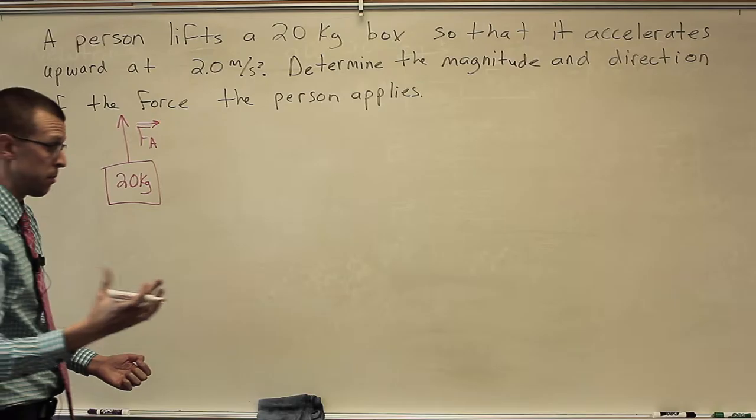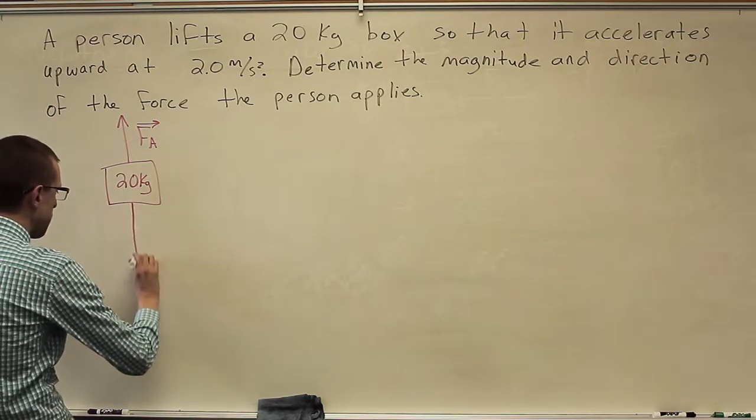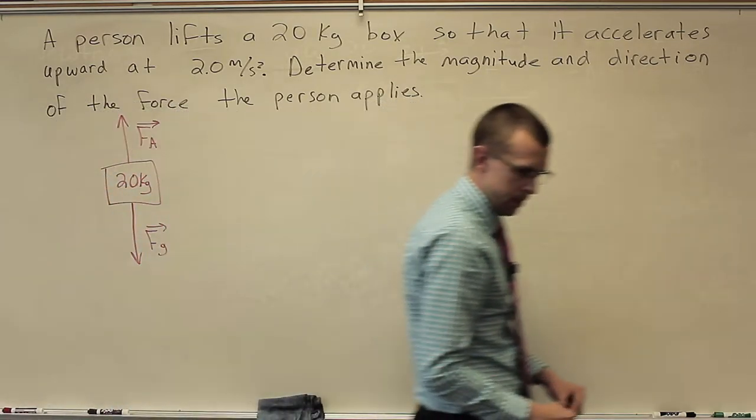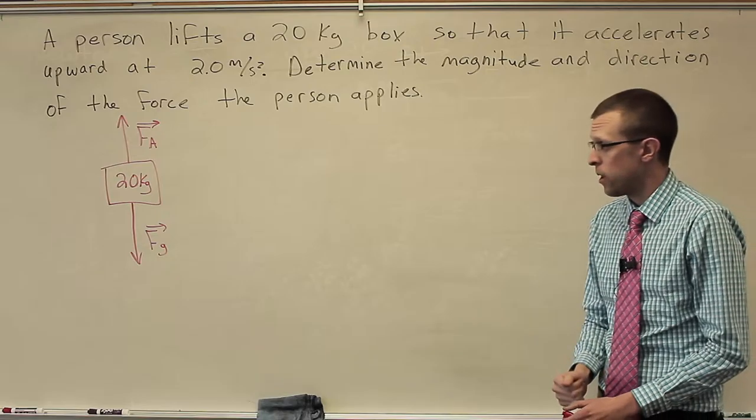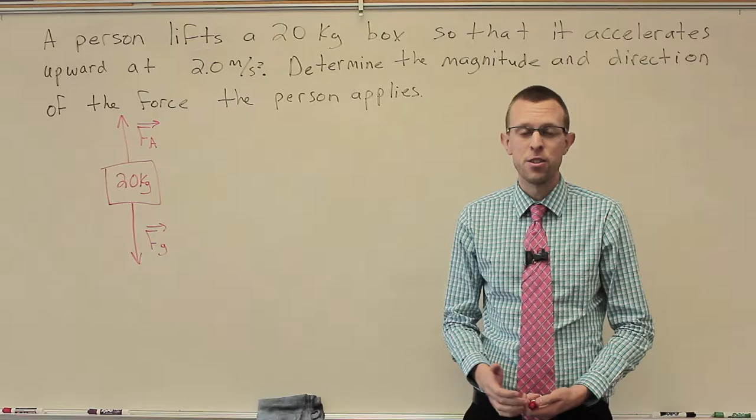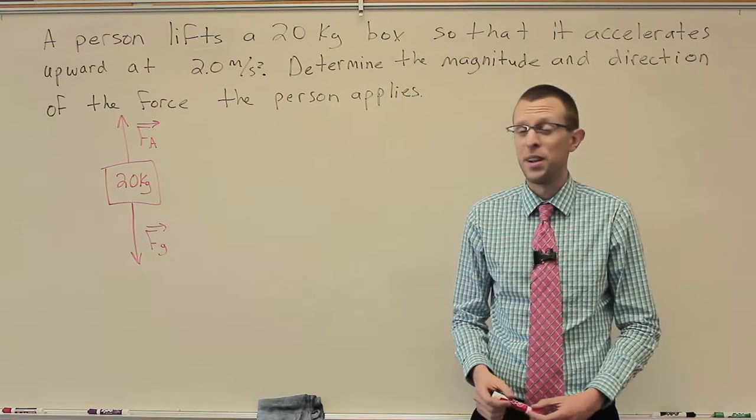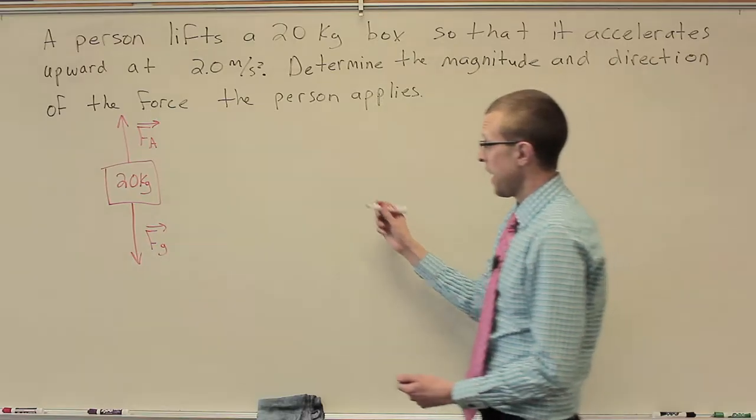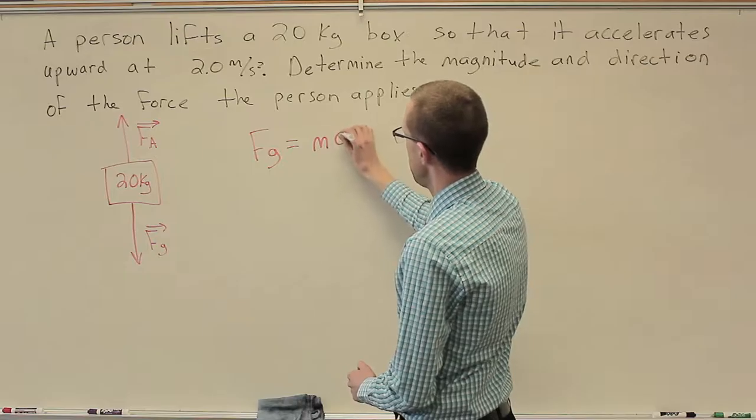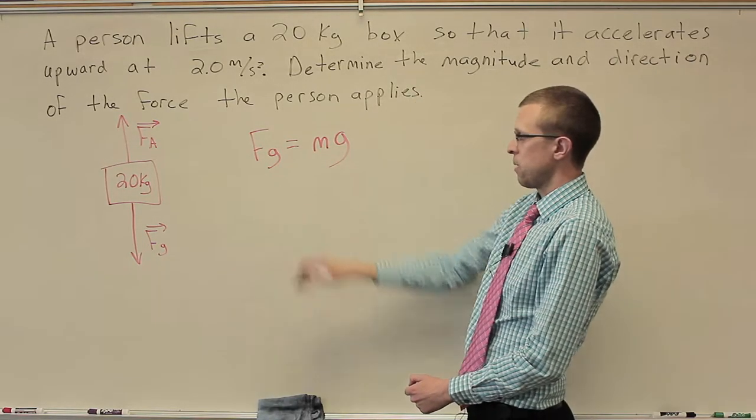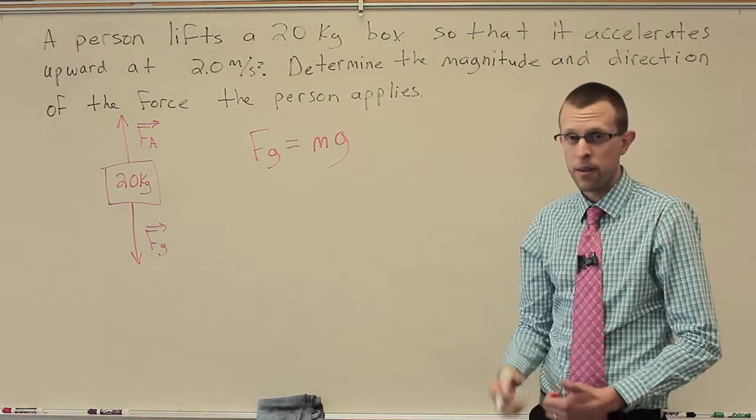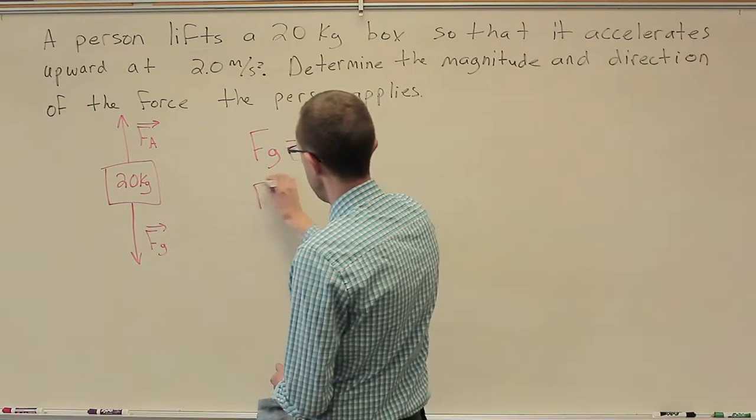We have, let's see, a 20 kilogram box. And we've got an upward force. I'll just call that F A. And I'll solve for that one. That's the force the person applies that I apply. And then we've got a downward force from gravity. Now that downward force from gravity is not a given quantity. So we're going to have to find a way to calculate that. Fortunately, we have a way to calculate the gravitational force that Earth applies to an object if that object is on Earth's surface. And that is going to be F G is equal to M times G.